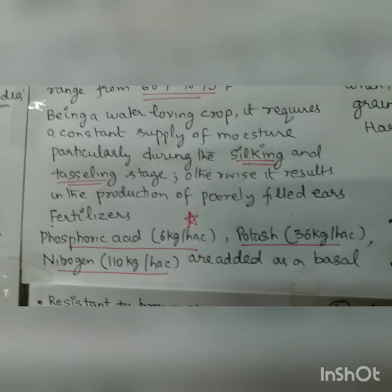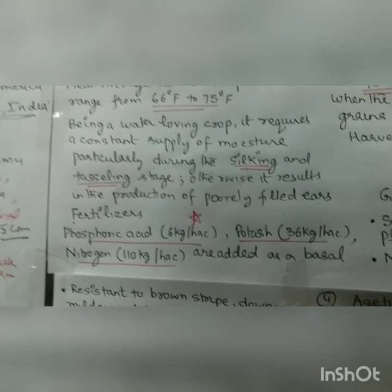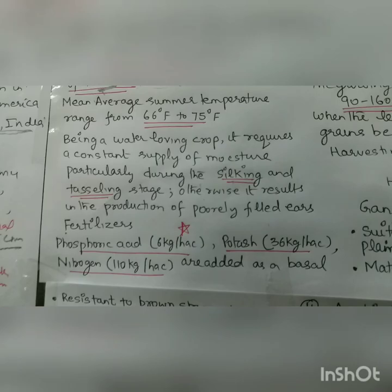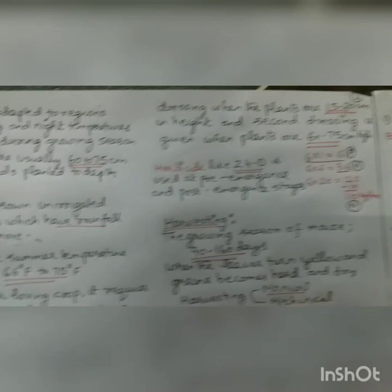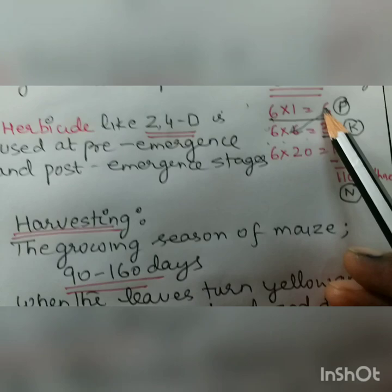Fertilizers are a very important part of cultivation. For maize, we use phosphoric acid at 6 kg per hectare, potash at 36 kg per hectare, and nitrogen at 110 kg per hectare. These are the three prominent components. A memory trick: maize has 5 letters — 5×1 is 5 for phosphoric acid, 5×6 is 30 + 6 = 36 for potash, and 5×6×6 gives us around 110 for nitrogen.